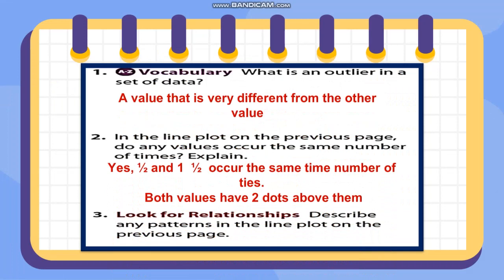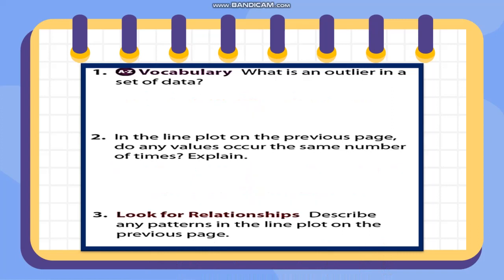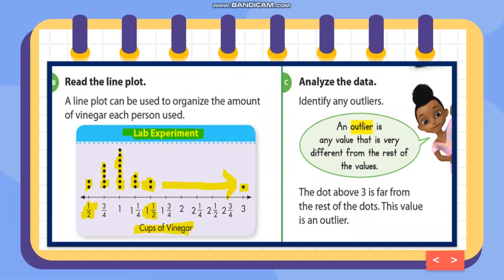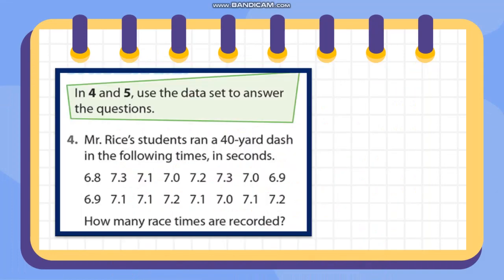Describing the pattern in the line plot: most of the dots are between one-half and one and one-half — more than two data points fall in that range. Now let's proceed to the next problem: Mr. Rise's students ran a 40-yard dash in the following times in seconds.